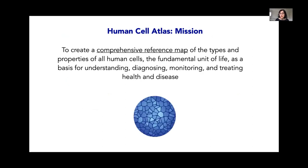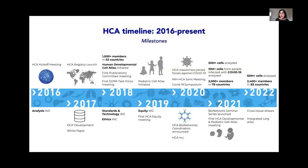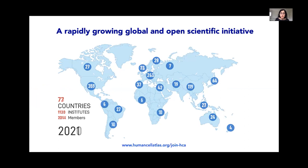These technological advances led us to establish, way back in 2016, a new international initiative known as the Human Cell Atlas, whose mission is to create comprehensive reference maps of the types and properties of all human cells — for basic understanding of biology, and for understanding, monitoring, and treating health and disease. HCA has had more than five years of existence, with a kickoff in 2016, a white paper in 2017, and community-wide data collection efforts since then. We have now reached scientists in 86 countries, spanning almost 1,500 institutions and over 2,600 members.